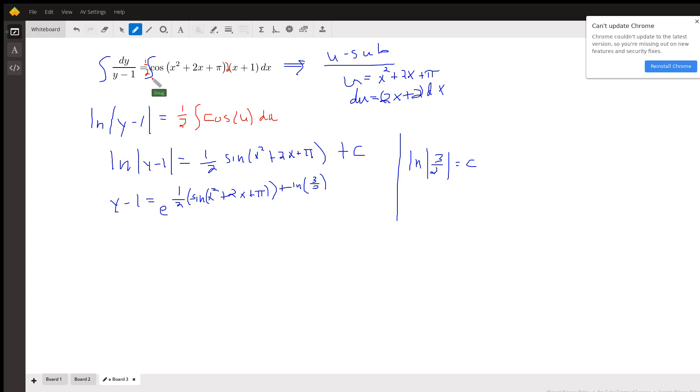So dy over y minus 1 equals cosine of x squared plus 2x plus pi times x plus 1 dx. And now we're going to take the antiderivative of each side to try to find out what y is.